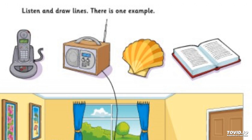Now listen to part three again. One. Which is May? Where's May, Mum? Is that her wearing trousers? No. She's wearing a skirt and a T-shirt. She looks great.